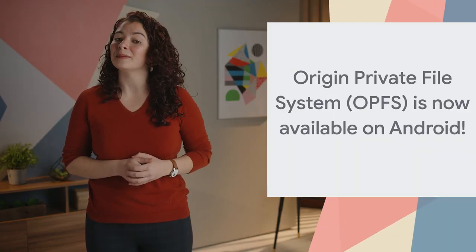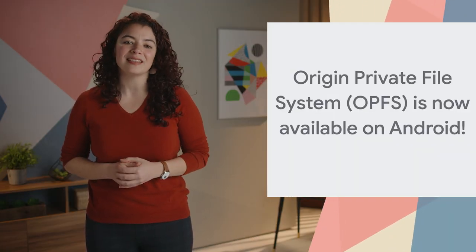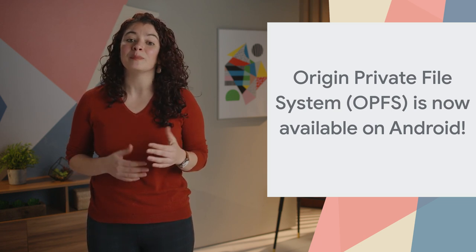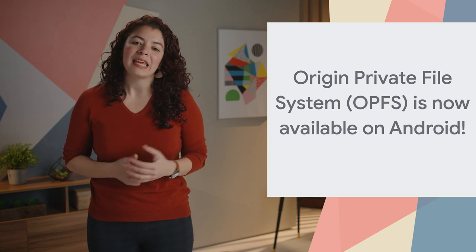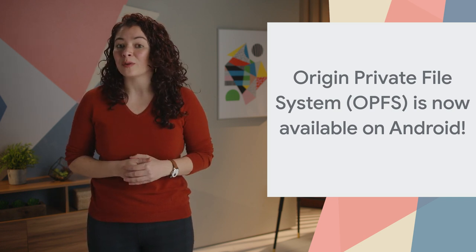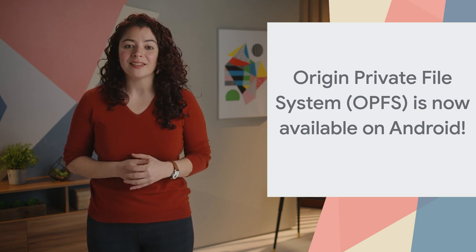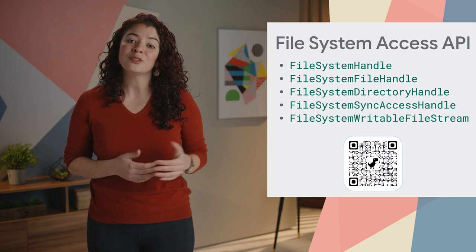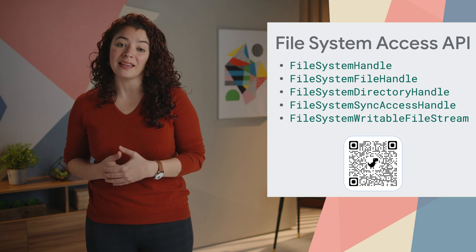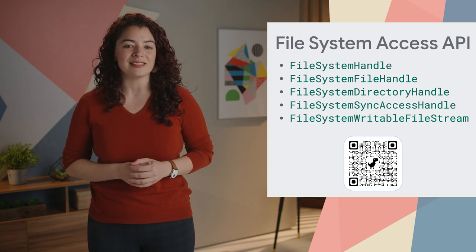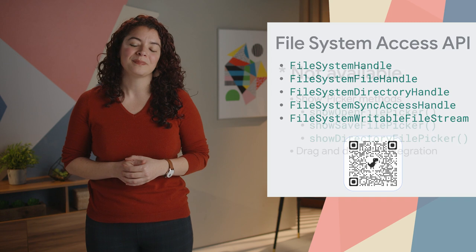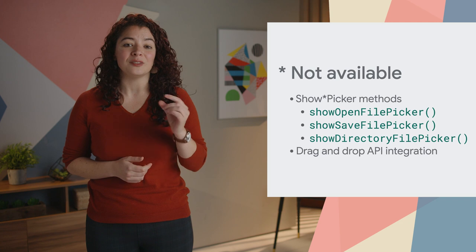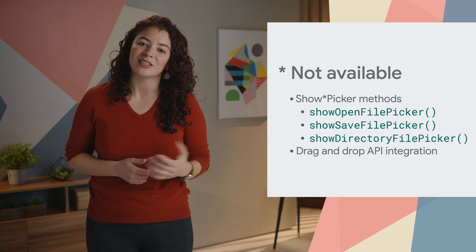The Origin Private File System, or OPFS, is a part of the File System Access API. It is a storage endpoint private to the origin of the page. It was launched on desktop on Chrome 102. Chrome 109 increases its compatibility by making it available on Android. It includes all the surfaces of the File System Access API to seamlessly manage files directly from the local file system, with a couple of exceptions. All the show picker methods and the drag and drop API integration are not available yet.